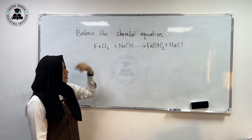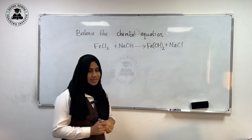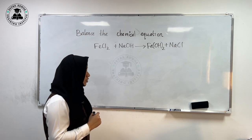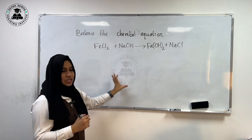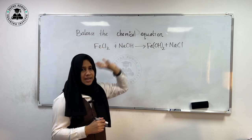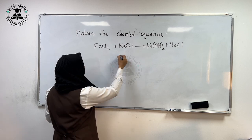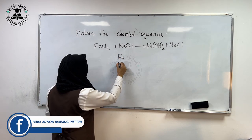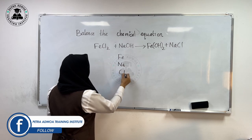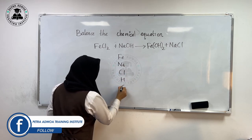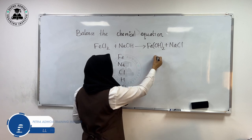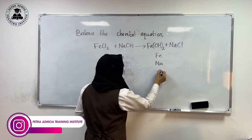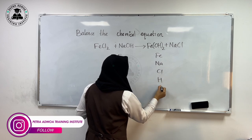We have a chemical reaction that is given here and we have to balance it. Before starting to balance the chemical reaction, you have to note down which elements are present on both sides. Here we have Fe — iron — then sodium, chlorine, hydrogen, and oxygen. On the right hand side also we have the same elements: iron, sodium, chlorine, hydrogen, and oxygen.